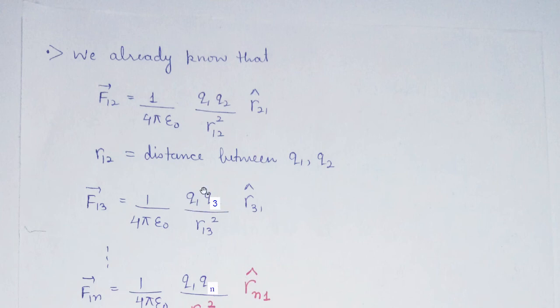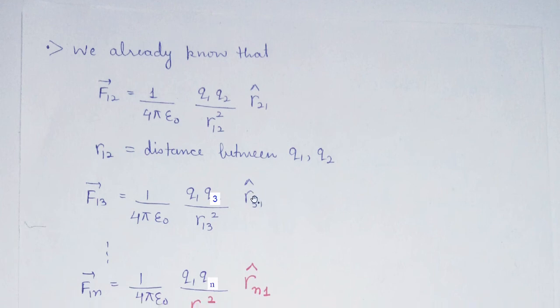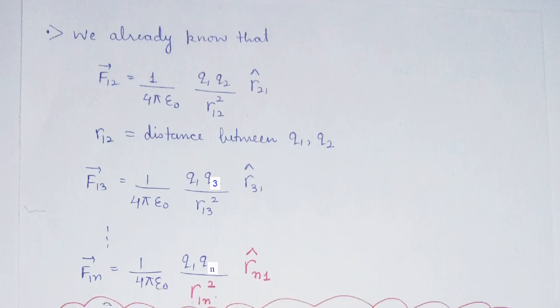F13 will have all the terms similar: q1 q3, r13 square, r31 unit vector, and so on to F1n with a similar formula.